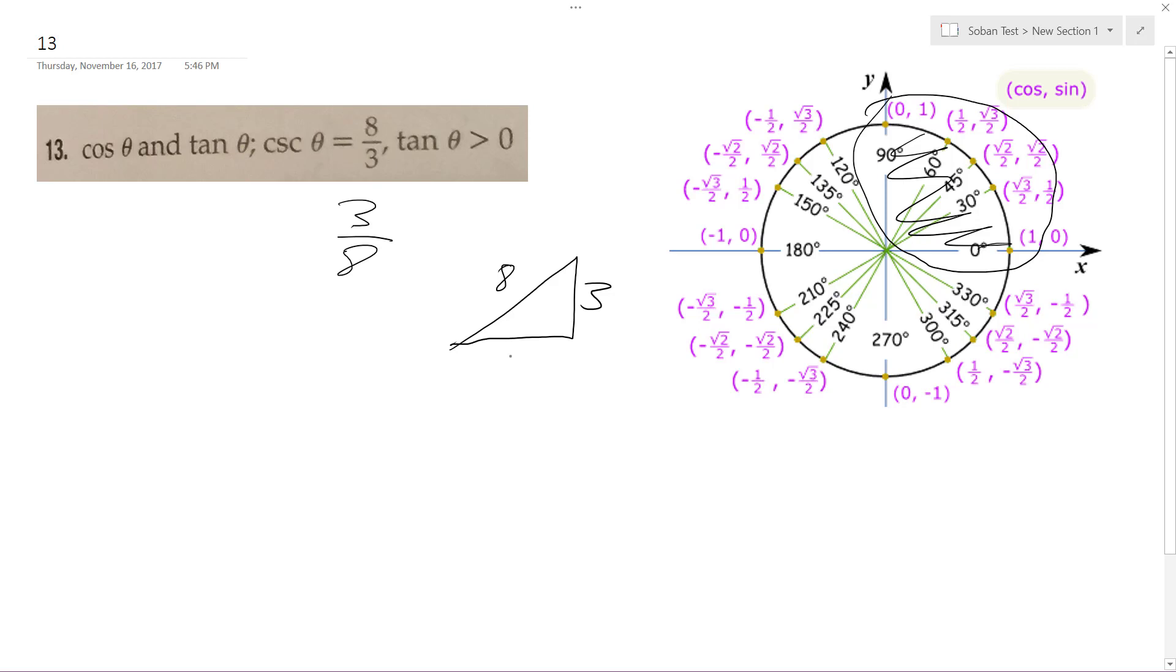And then this is going to be the square root of 64 minus 9. I think that's just the square root of 55.